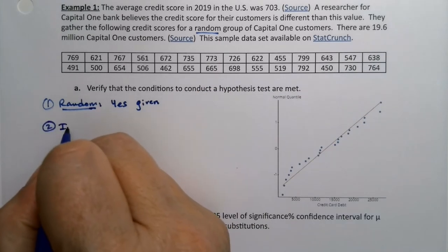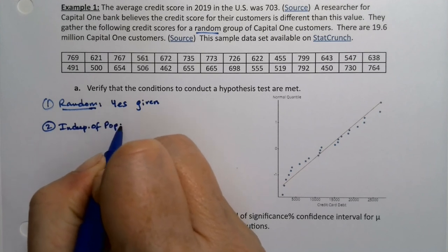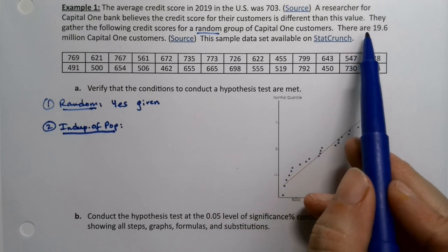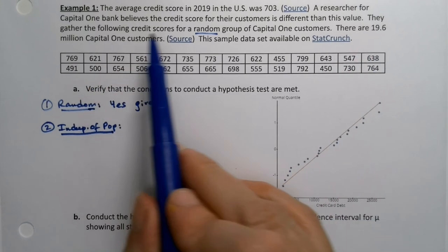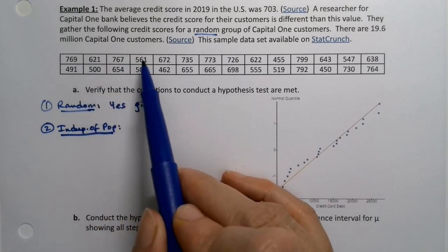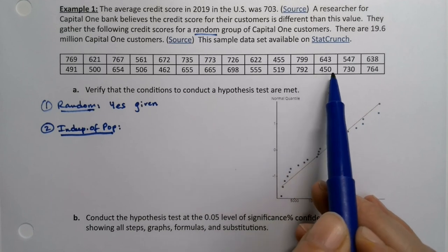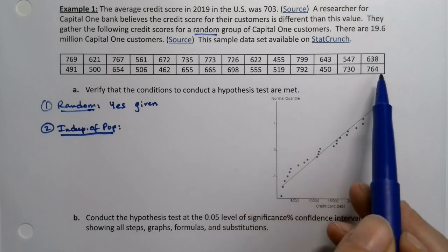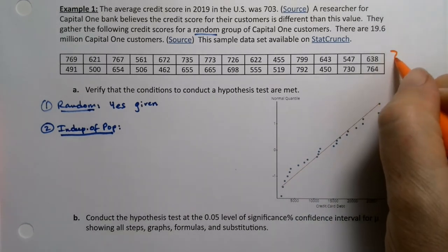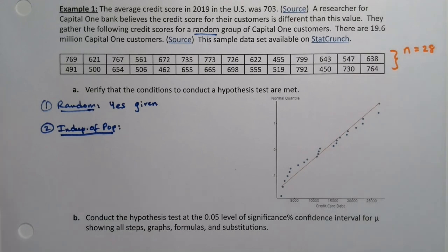Number two would be independent of the population. All right, well, let's see here. There are 19.6 million Capital One customers, and they did a random group here. Let me count: 1, 2, 3, 4, 5, 6, 7, 8, 9, 10, 11, 12, 13, 14 times 2 is 28. So you'll notice, actually, I'll make a little comment over here.